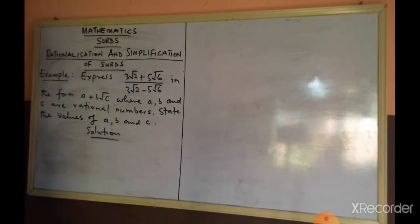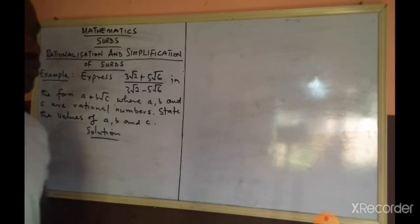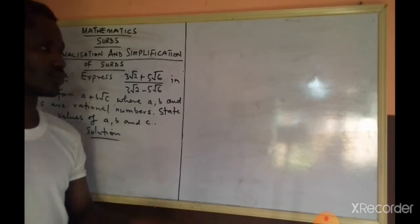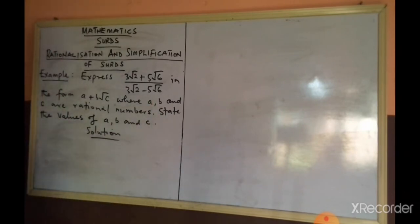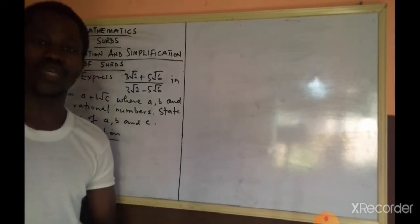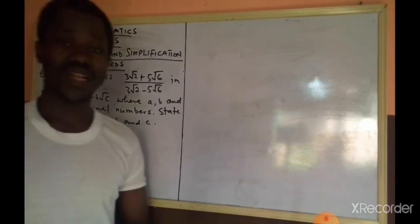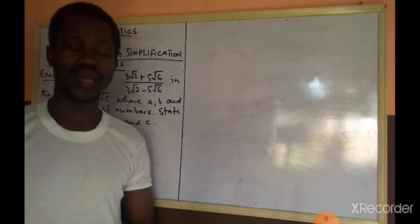The example here says that you should express 3√2 + 5√6 all over 3√2 - 5√6 in the form A + B√C, where A, B, and C are rational numbers, and you have to state the values of A, B, and C.